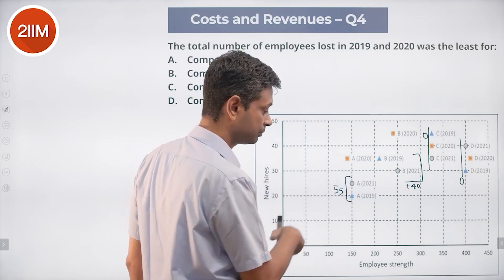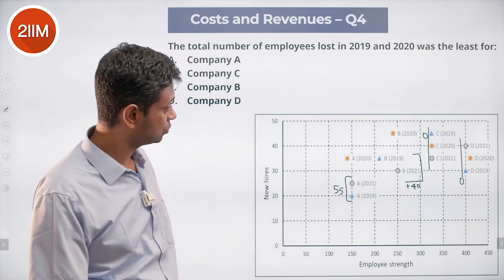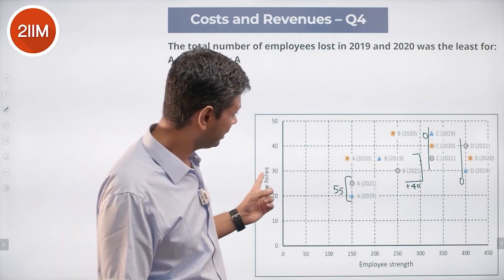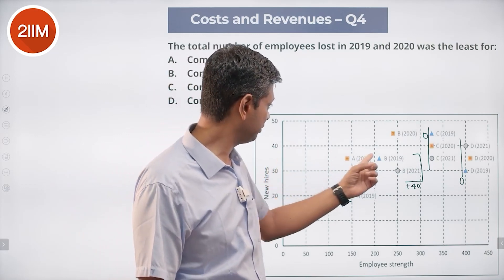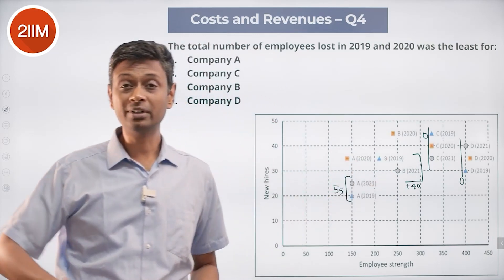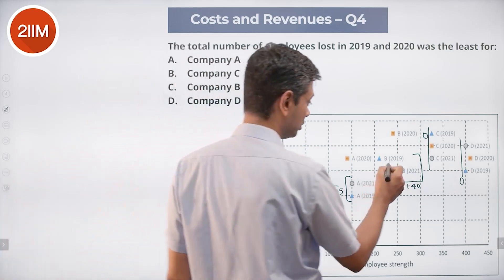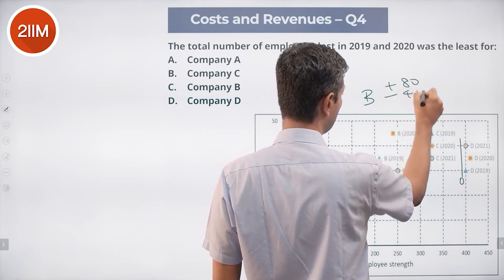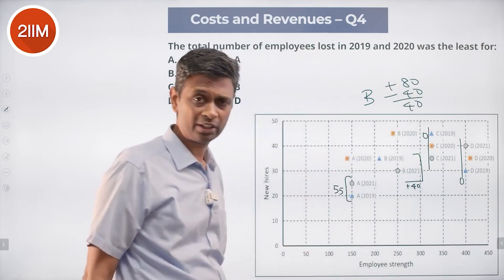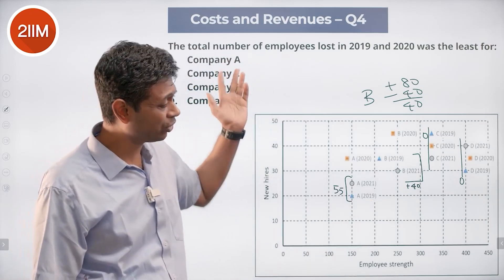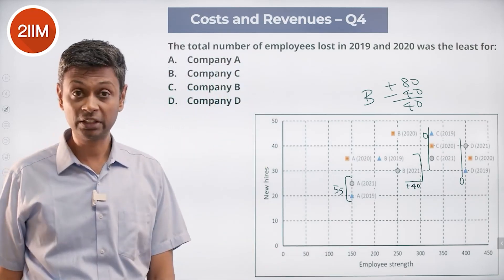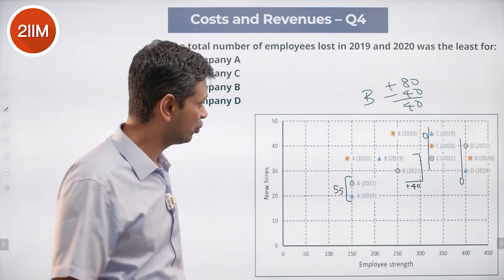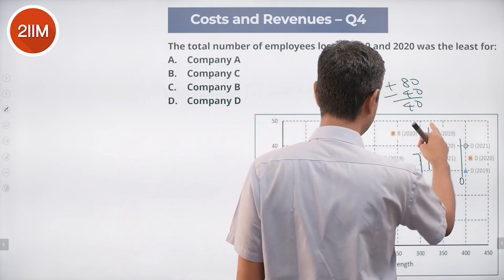For B: net additions were 40, and I added 35 in 2019 and 45 in 2020 — that's 80 people brought in, but total is only 40 more. So 80 minus 40 = 40 people have left B. For A: the net change from 2019 to 2021 is no change, and they recruited 55 people across those years, so 55 people have left A.